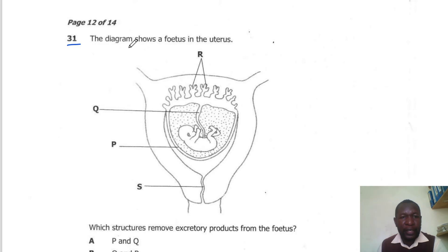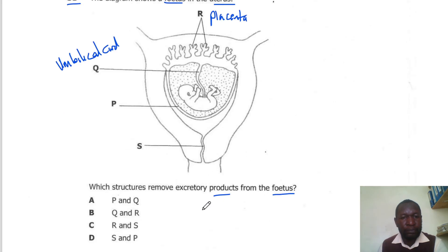Question 31. The diagram below shows the fetus in the uterus. Which structures remove excretory products from the fetus? Waste will be removed through the umbilical cord, which is Q, and R, which is the placenta. So the correct answer here is B.